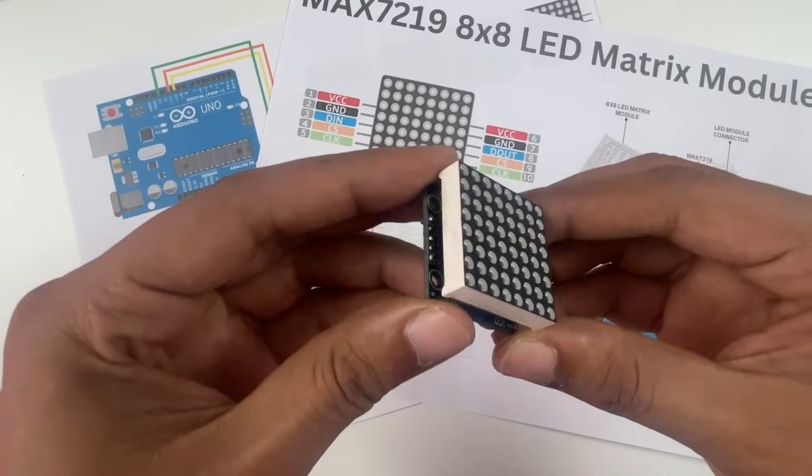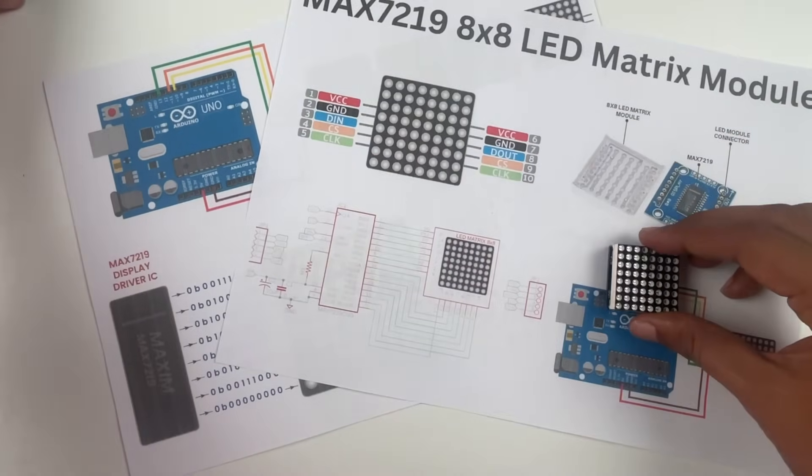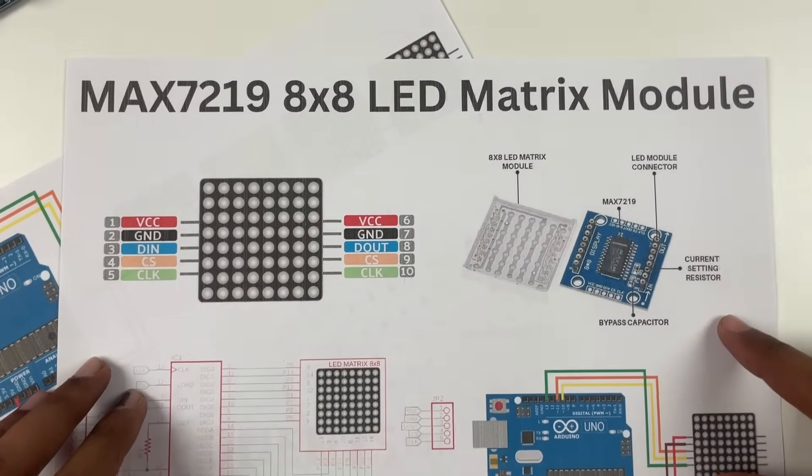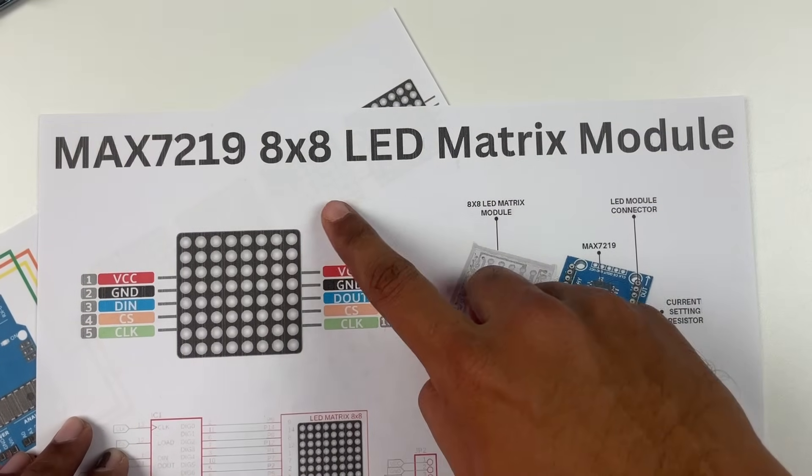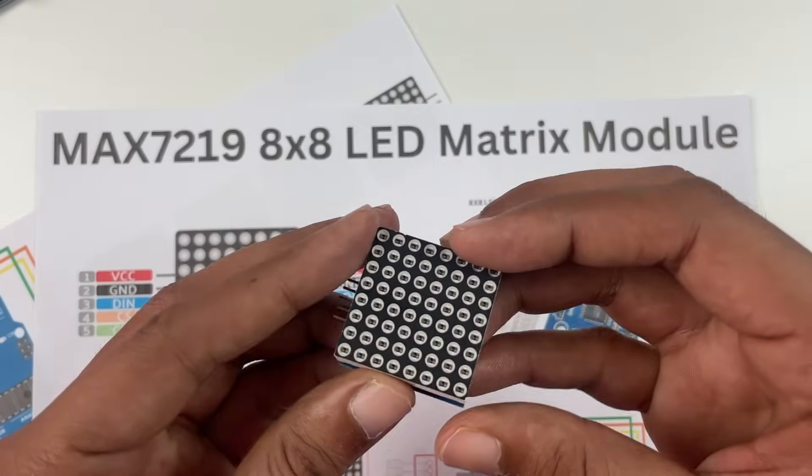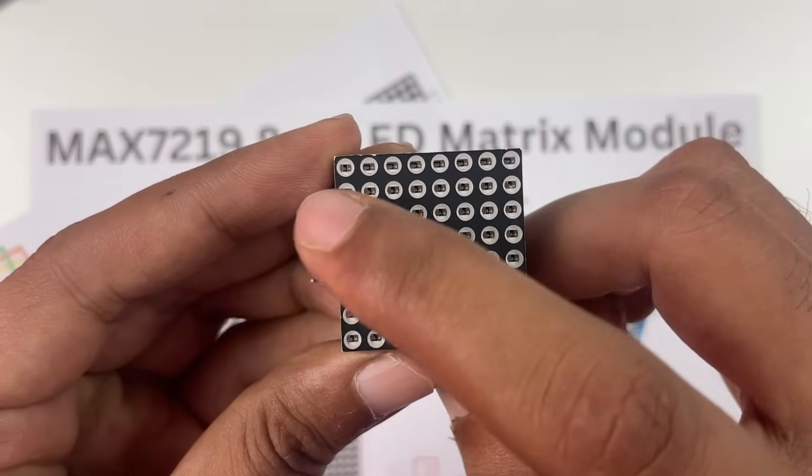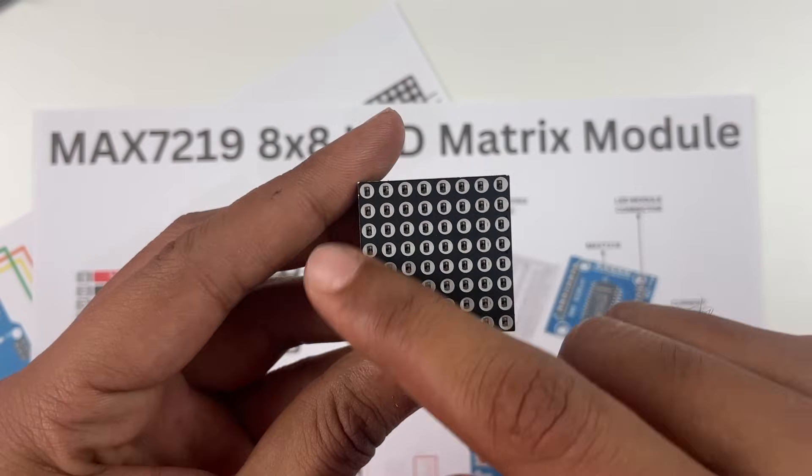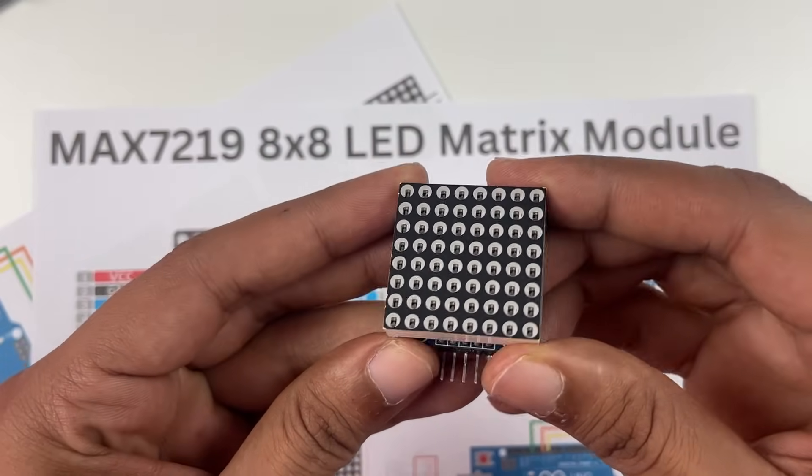Let's start with the name of the module. The module is called 8x8 LED matrix module because it has 8 LEDs in the row and 8 LEDs in the column with a total of 64 LEDs, which appears like a matrix.